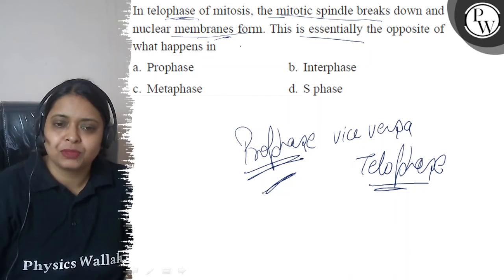Let's see the options. A option, prophase, right answer. B interphase, wrong. C metaphase, wrong. D S phase, wrong.